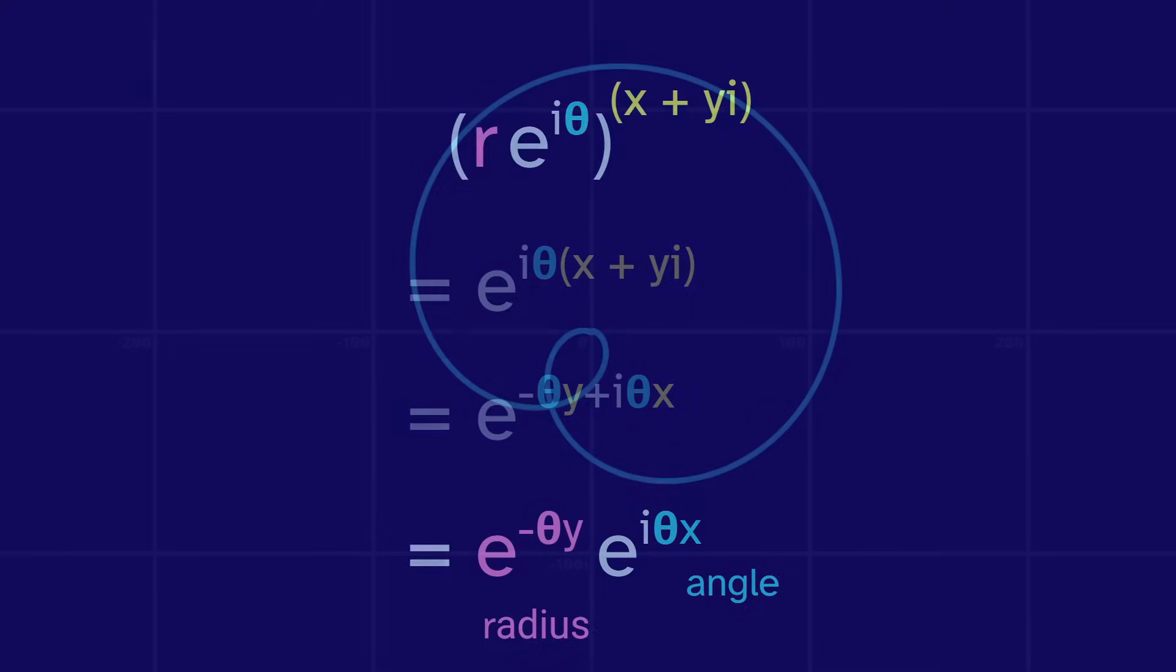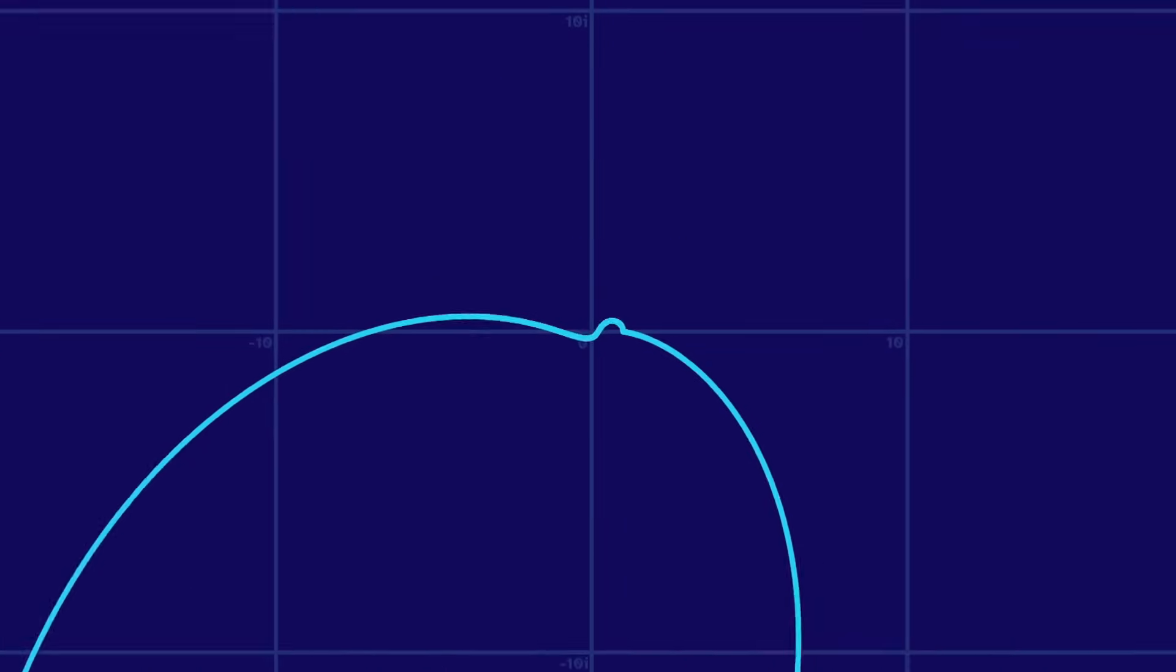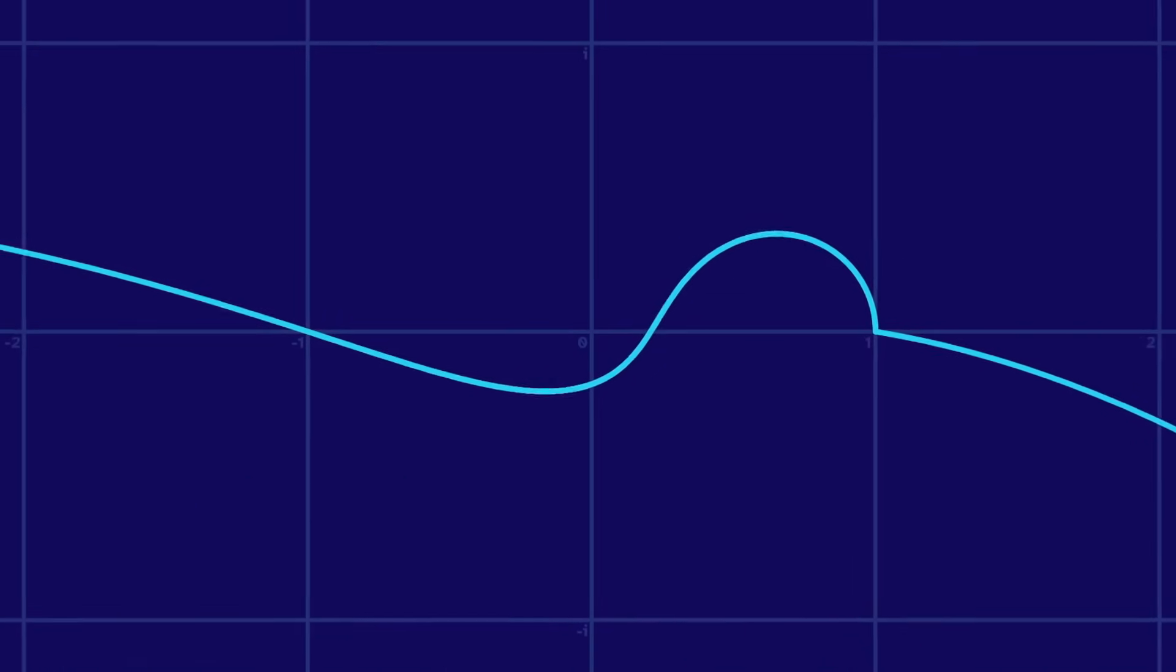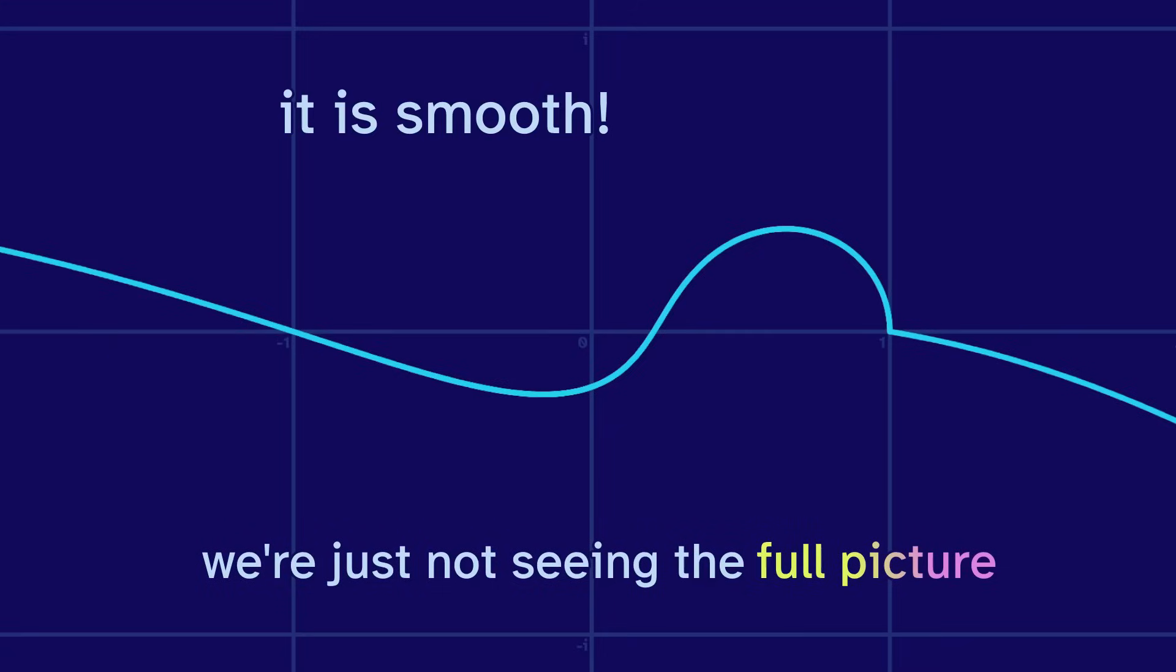Let's try it out. Here is a circle to the power of a circle. Okay, this is kind of cool, but why is there a corner? The input was a circle, so the output should be smooth. And it is smooth. We're just not seeing the full picture.